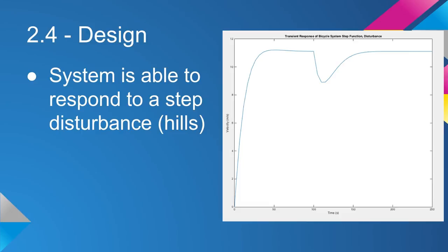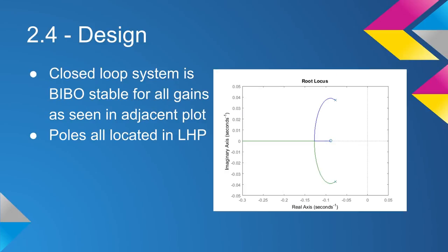As can be seen in our root locus plot, the closed loop system is BIBO stable for all gains. The poles are located in the left half plane as well as the zero.